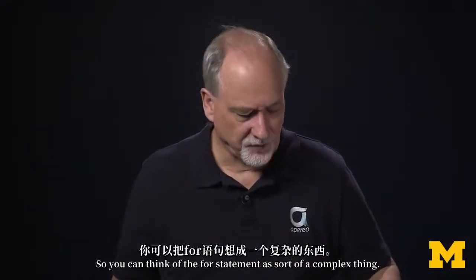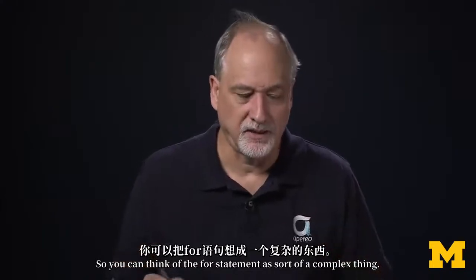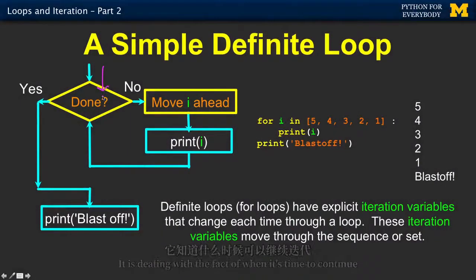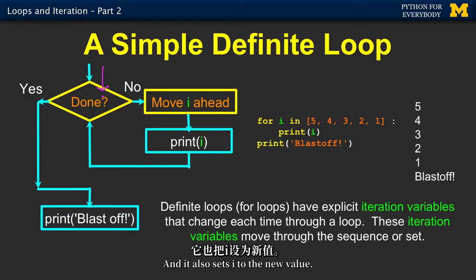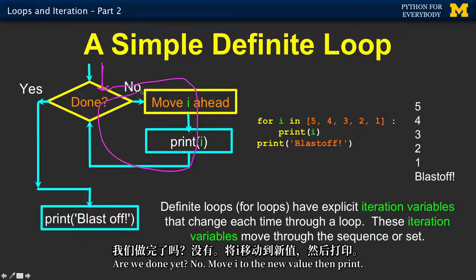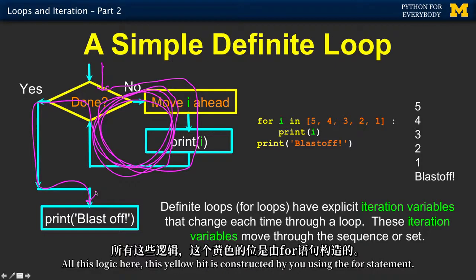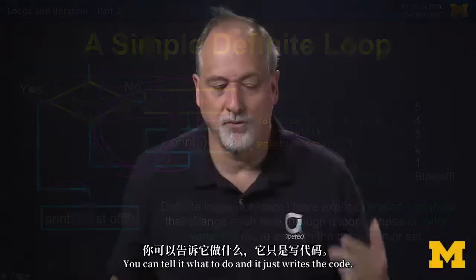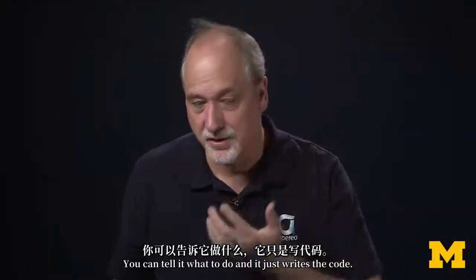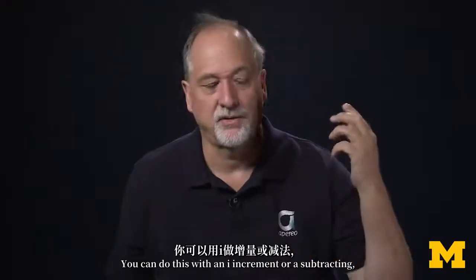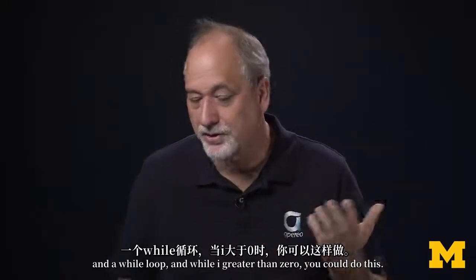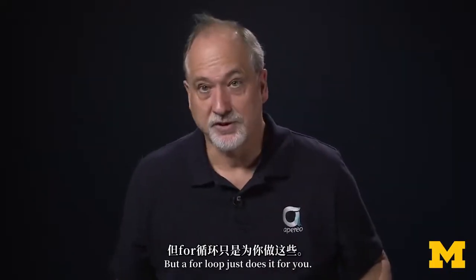So you can think of the for statement as sort of a complex thing. It is dealing with the fact of when it's time to continue and when you're done, it knows about that, and it also sets i to the new value. So it's like, are we done yet? No. Move i ahead to the new value, print it. Are we done yet? No. Move i to the new value, then print. On and on and on. Oh, now we're done. All this logic here, this yellow bit, is constructed by you using the for statement. You can tell it what to do, and it just writes the code. You could do this with an i of increment, or a subtracting, and a while loop, and while i greater than zero, you could do this. But for loop just does it for you. So for does a few things for you.